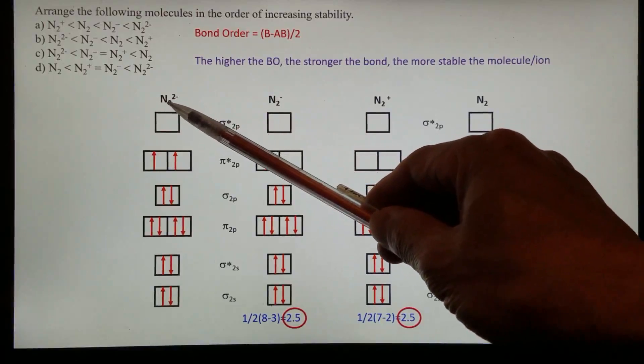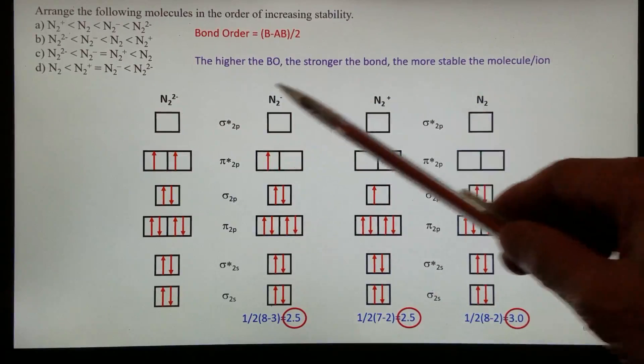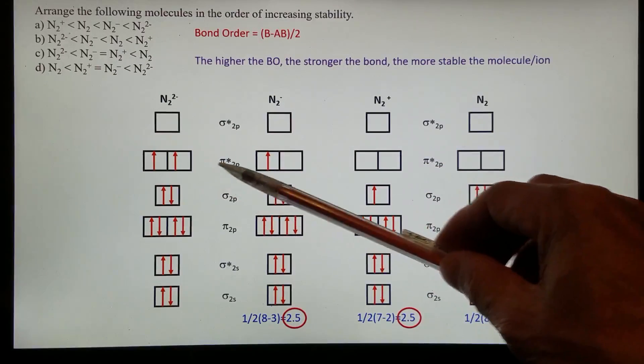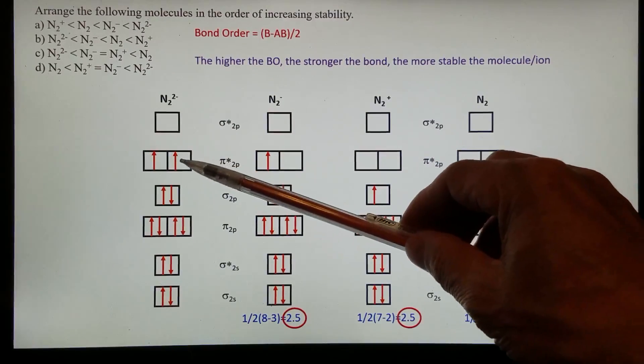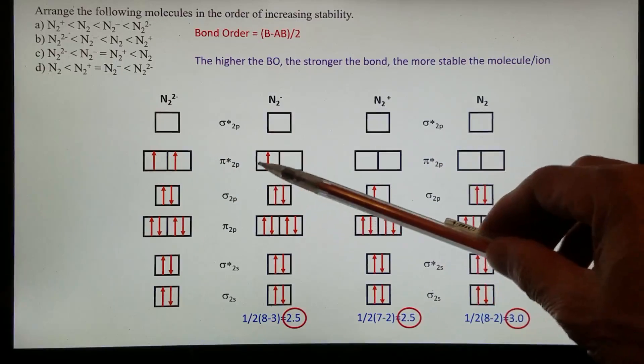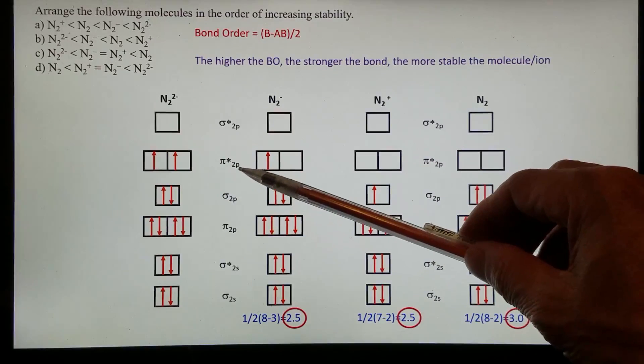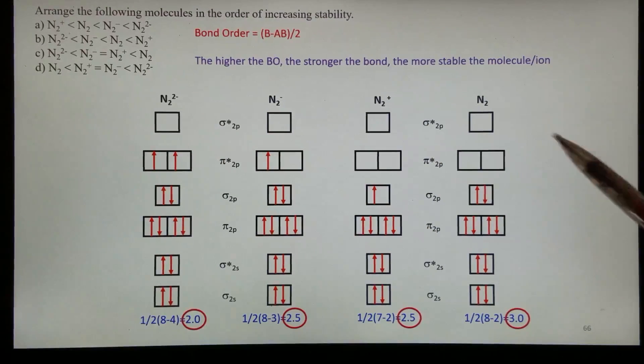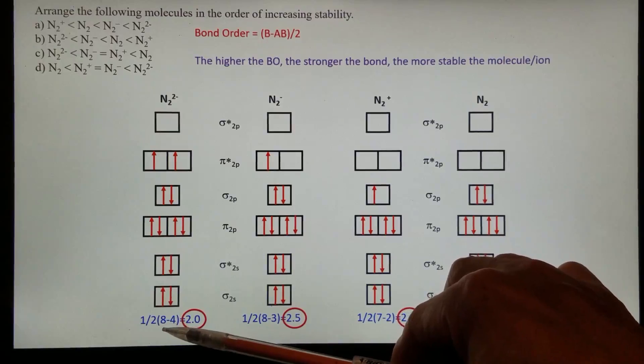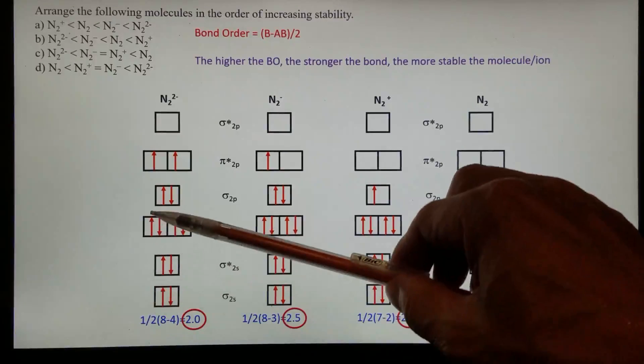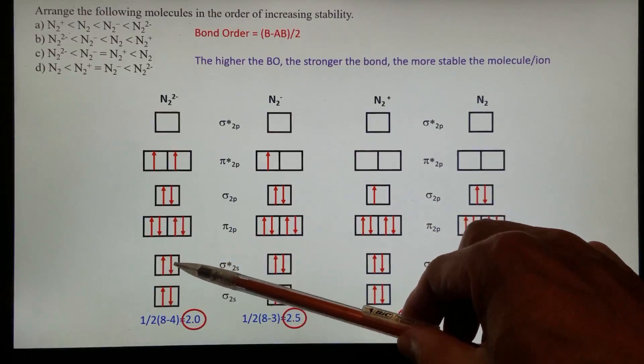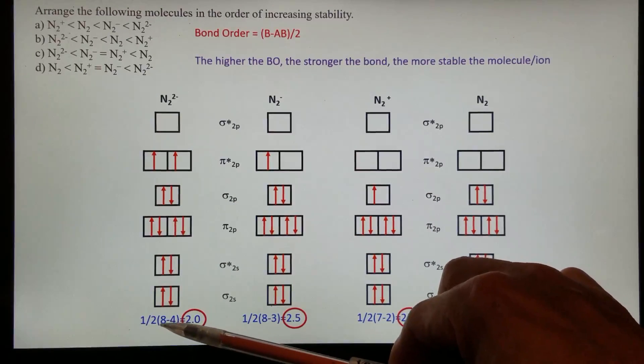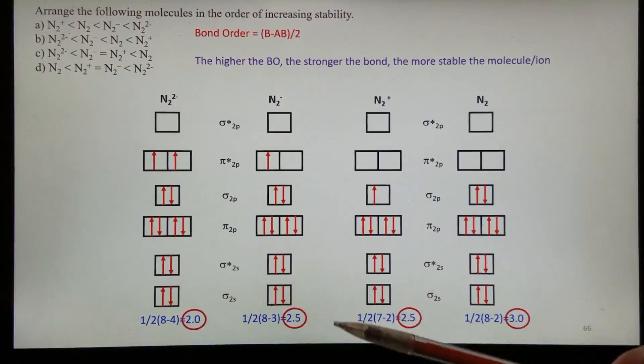Now, nitrogen molecule gain 2 electrons, becomes N2, 2 minus. Then of course, now there are 2 electrons occupying the pi 2p star, anti-bonding orbital. The total number of bonding electrons still 8, but the anti-bonding electrons, 2 plus 2, 4. 8 minus 4 equals 4 divided by 2, that's 2.